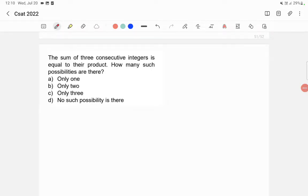The sum of three consecutive integers is equal to their product. How many such possibilities are there? This is a simple question, but you need to think very carefully here because the question has asked about integers.